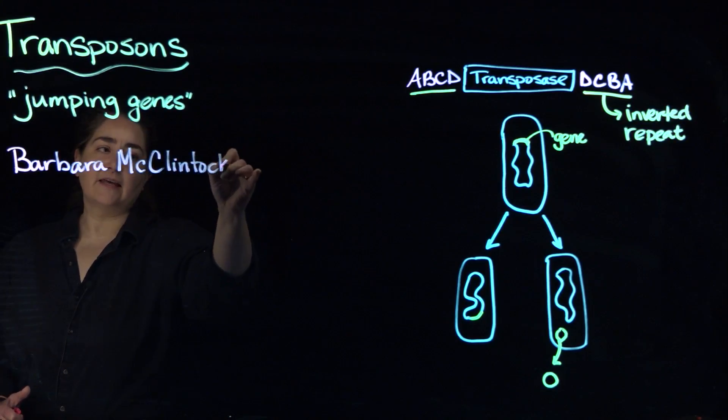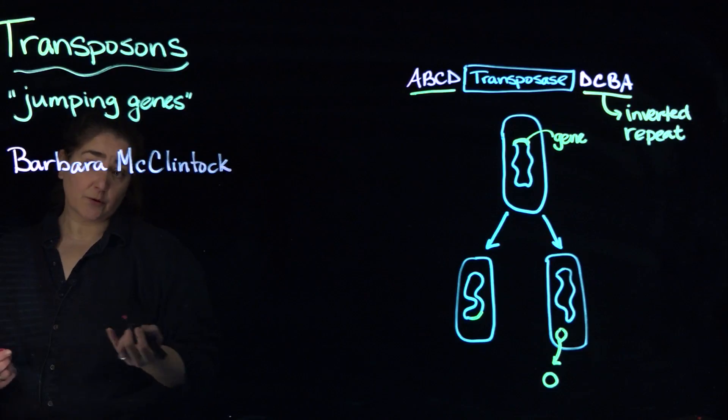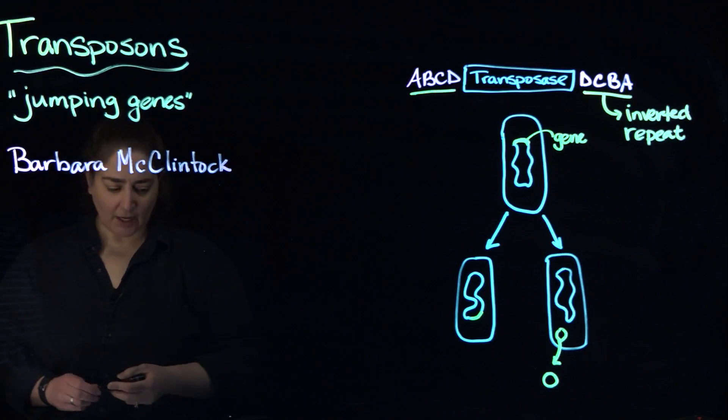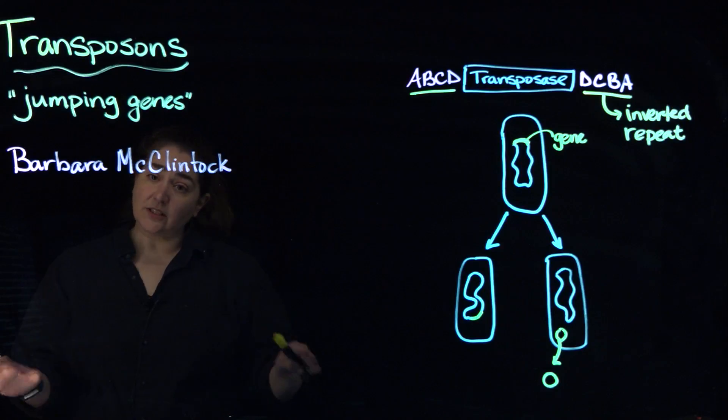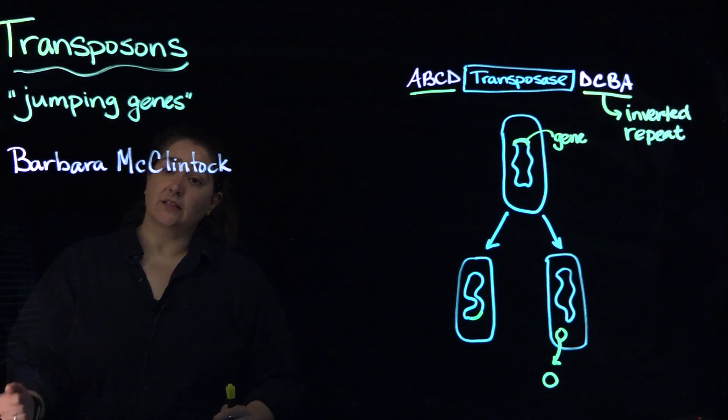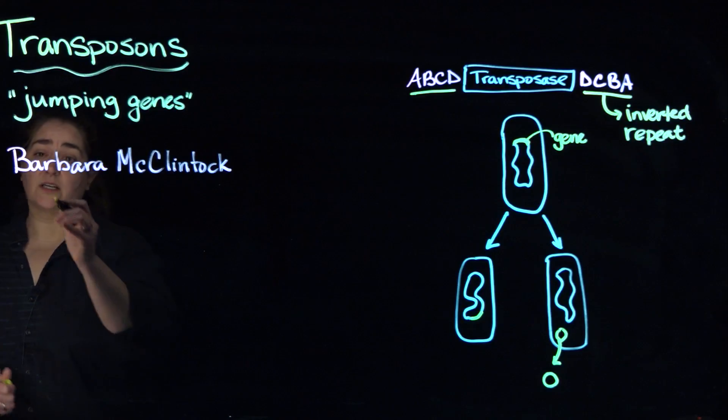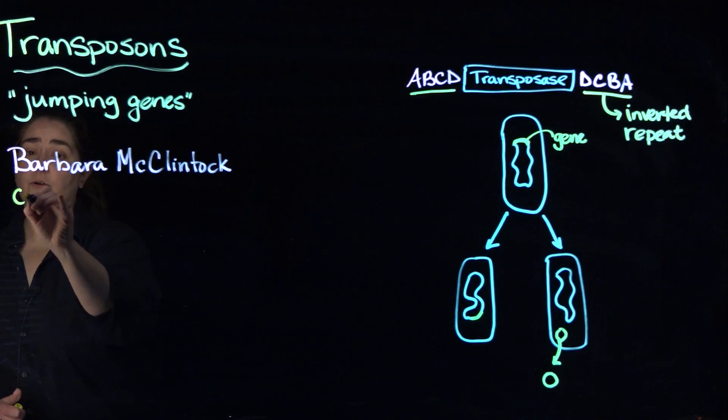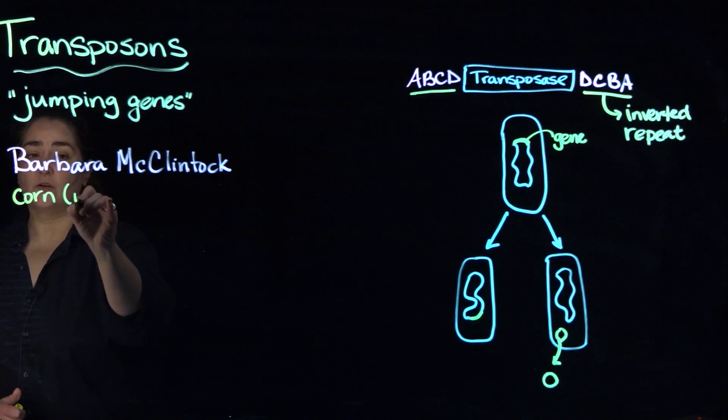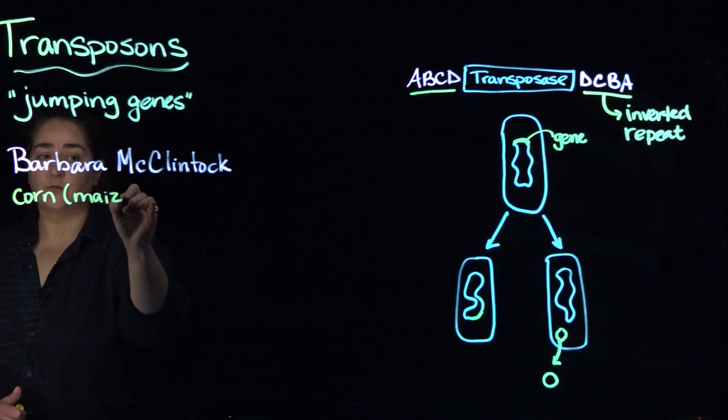And that scientist was Barbara McClintock. Now Barbara McClintock had absolutely nothing to do with bacteria or prokaryotic cells. What Barbara McClintock studied was corn or maize, if you prefer to call it that.